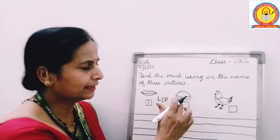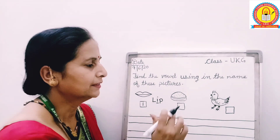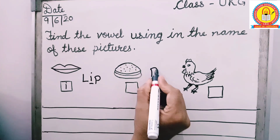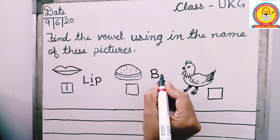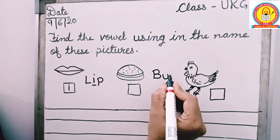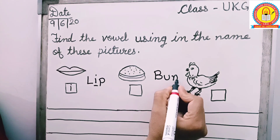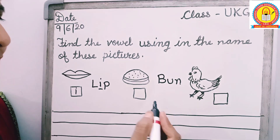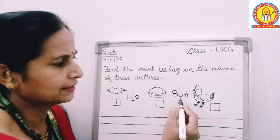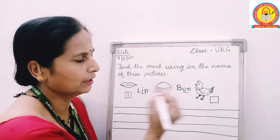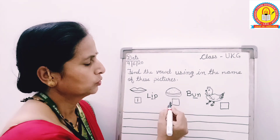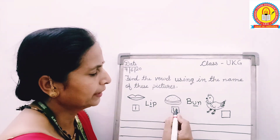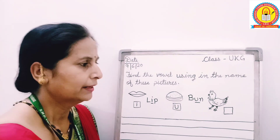What is this? This is bun. B, U and N — bun. In bun, find the vowel. This is vowel U. So we will write the U in this box. Okay?